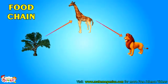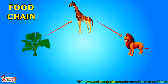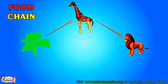So you have seen plants make their own food. Other animals eat plants, and some other animals eat those animals who eat plants. So all are dependent on plants. This is also called a food chain. It starts from plants.